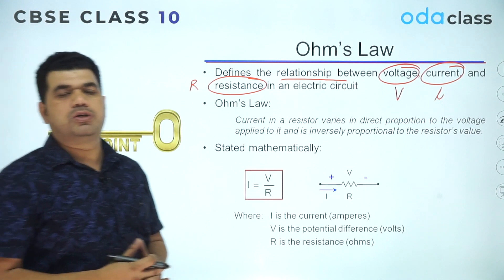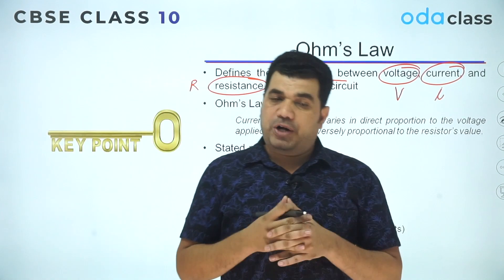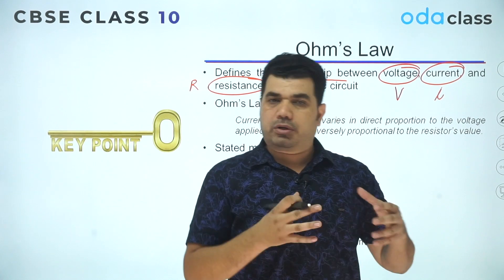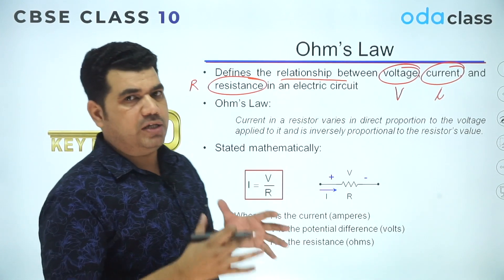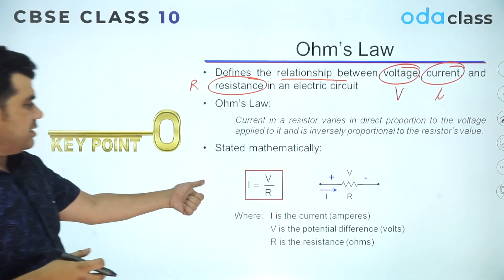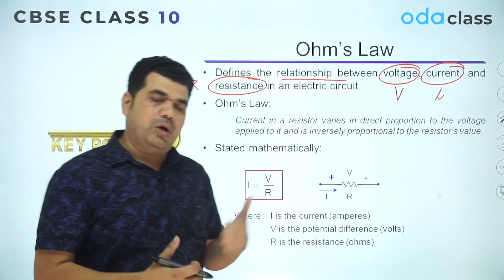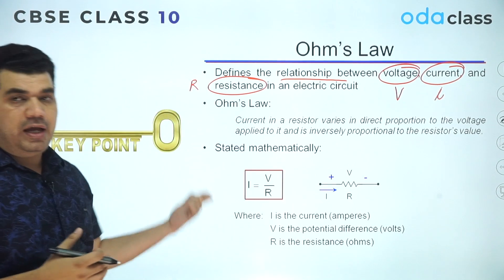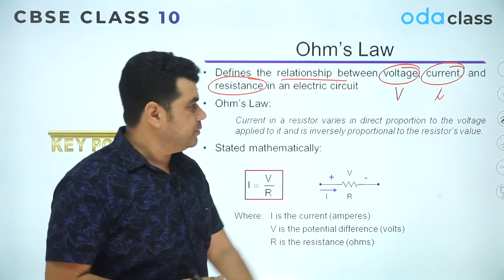The relation is: I is equal to V divided by R, or you can say potential difference equals current multiplied by resistance. This is the basic expression for Ohm's law. Now let's see how to apply this formula in a question involving a live circuit.